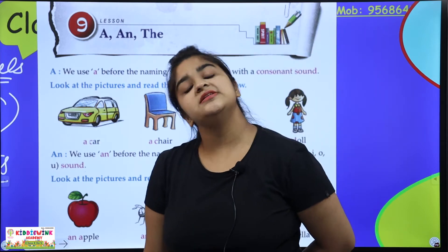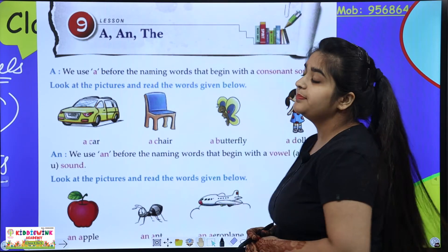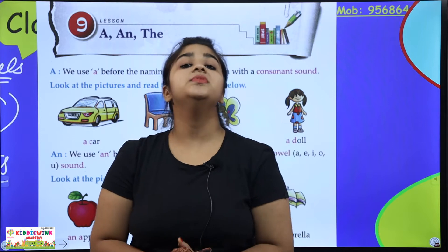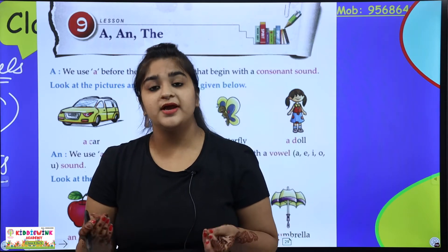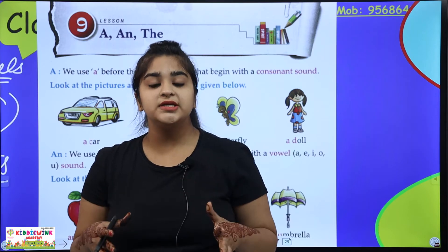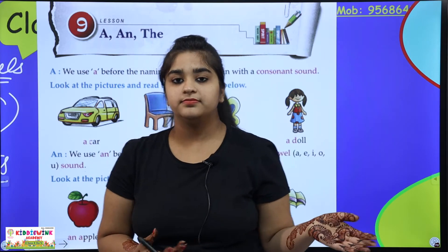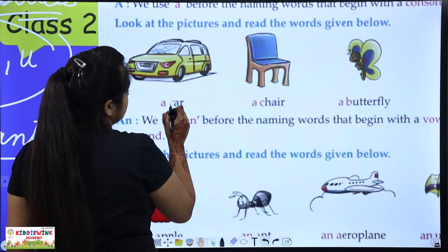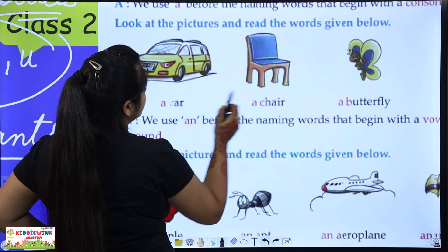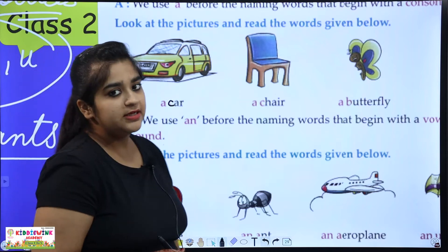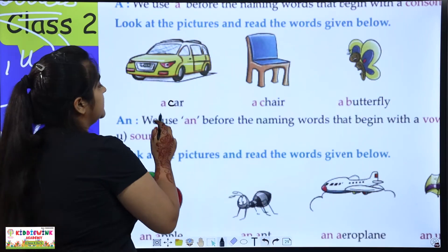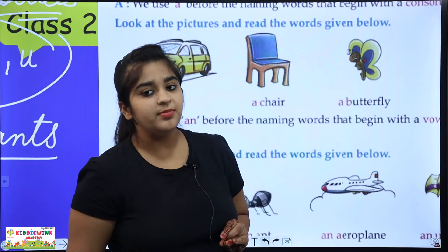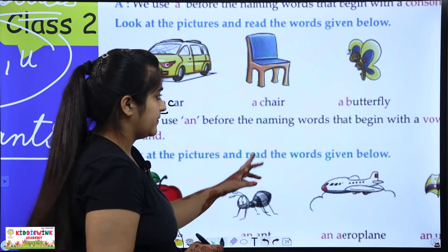A is used for any one thing. A is used before any word starting with a consonant — like B starts from B, or D starts from D. So what do we use before these consonants? A. Like, 'a car' — C is a consonant, not a vowel. A, E, I, O, U — C is not a vowel, so we use A. A is used for one thing and before consonants.